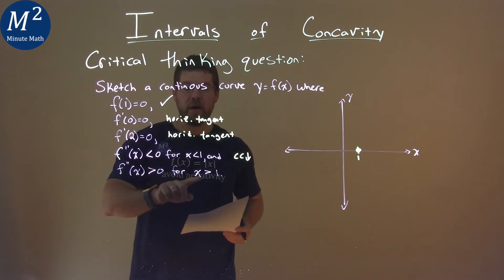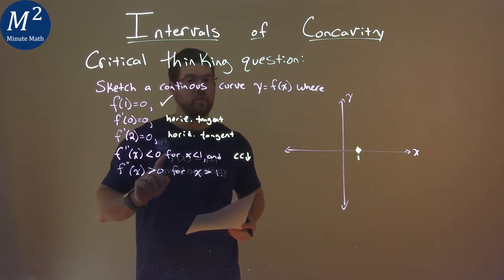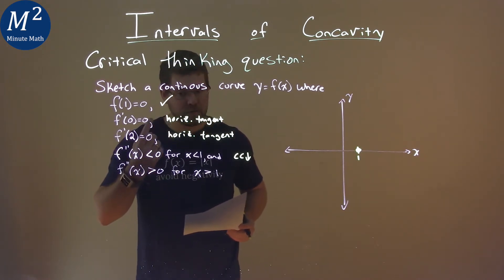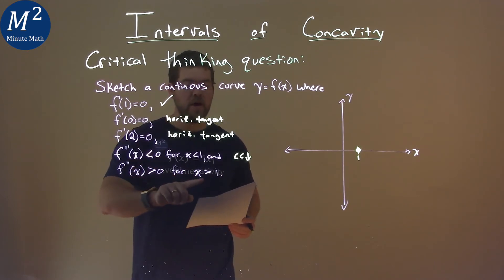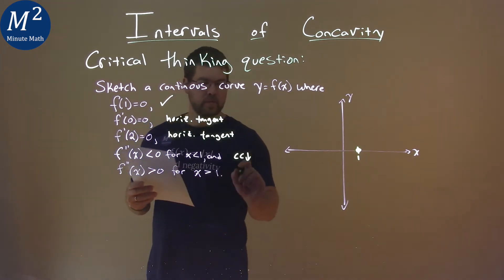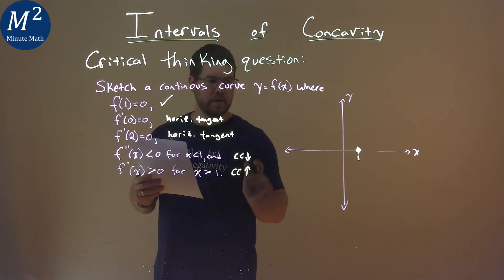Same thing here. We're concave up. f double prime of x is greater than 0, aka positive, where the other one's negative, this one's positive, for when x is greater than 1. So we're concave up here.